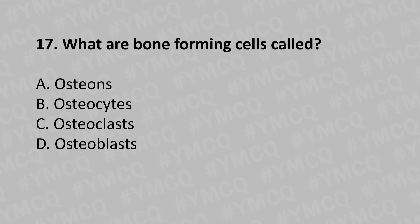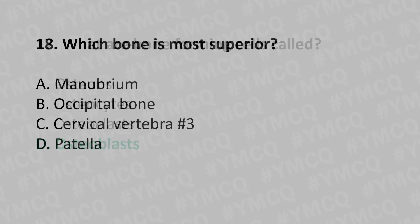Moving to our 17th question: What are the bone-forming cells called? Option A: osteons, Option B: osteocytes, Option C: osteoclasts, Option D: osteoblasts. The answer is Option D: osteoblasts.